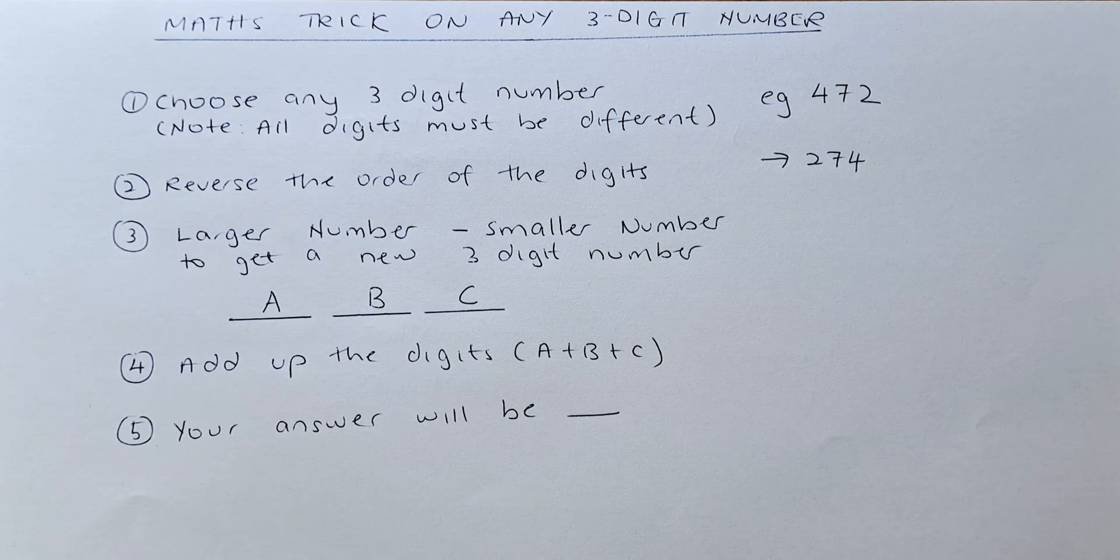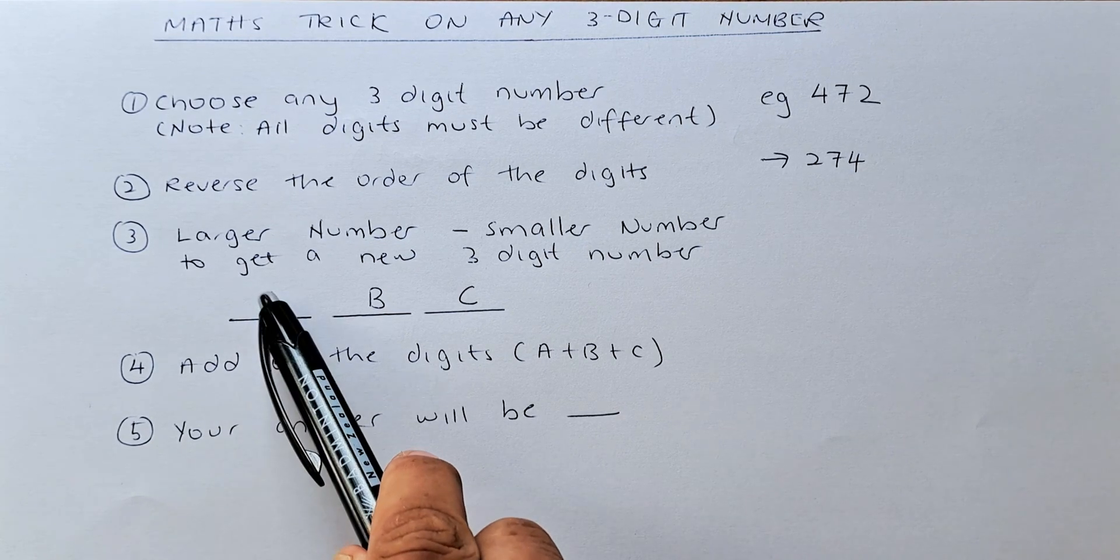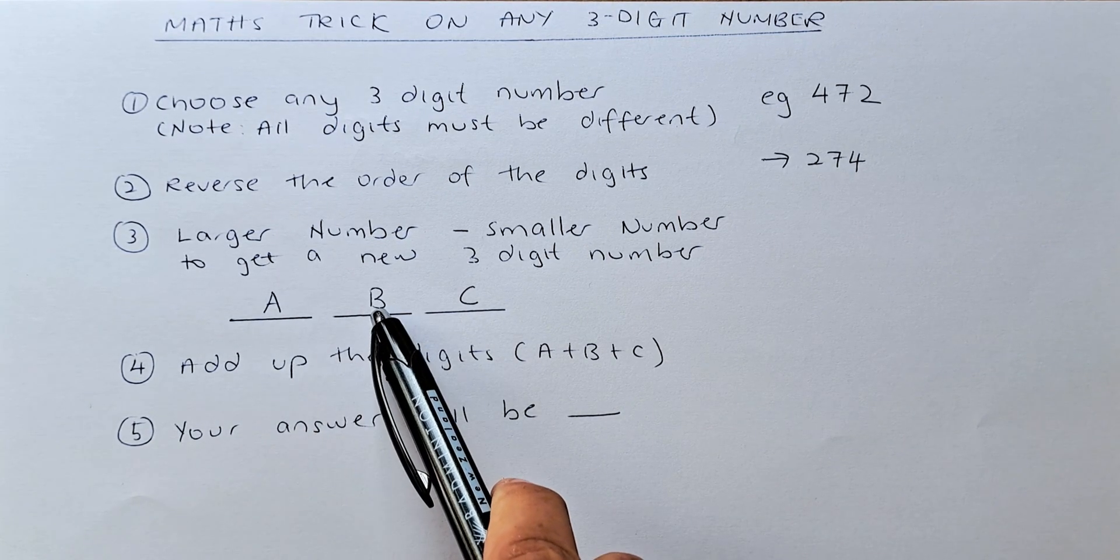Okay. The last step is the most important part. Please listen up. You are going to add A, the digit in A, plus B, plus C.